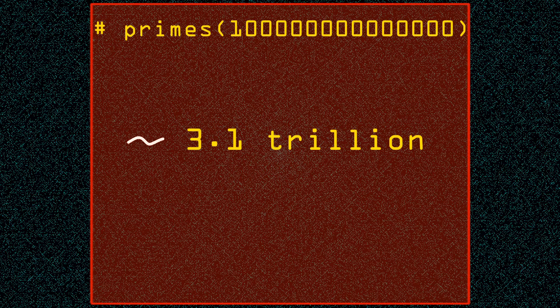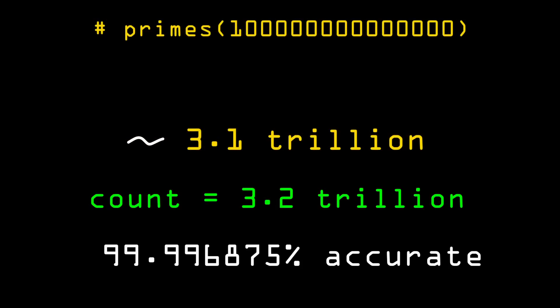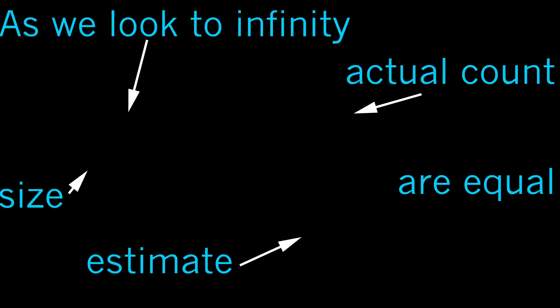Compare this to the actual count which is 3.2 trillion. This is over 99.99% accurate even at this relatively small scale. So to recap: given a search size up to some integer x, the prime density is about 1 divided by ln(x), and the number of primes is about x divided by ln(x). This is the prime number theorem.